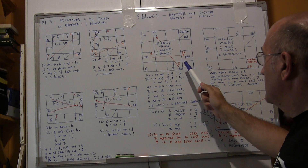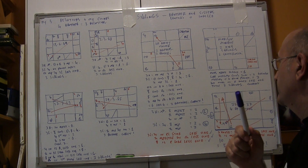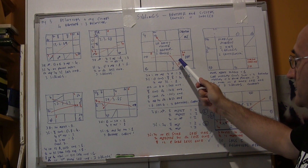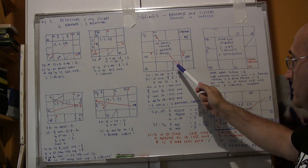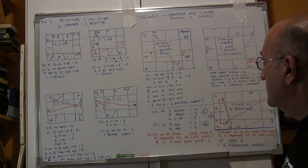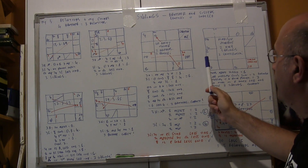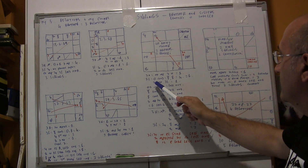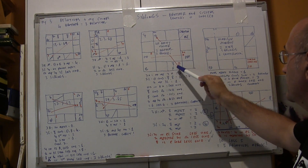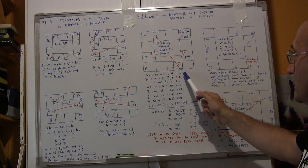Then we go to the third lord, which is the Sun. The Sun is conjoined with Mercury and Venus. Mercury gives two relatives as he is a dual planet, and Venus, as he is conjunct Mercury, also gives two relatives. Then we have Saturn aspecting the third lord — one, two, three, four, five, six, seven — giving another relative. The total is six.